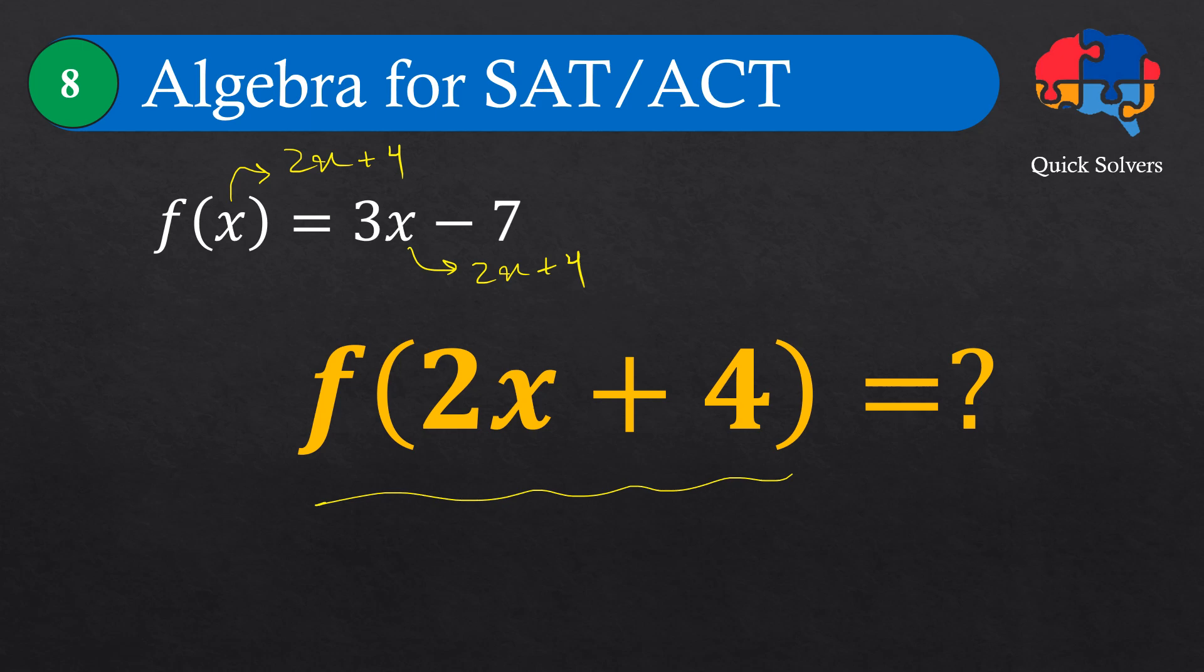If I do that, then I'll get f of—so let's replace this—f of 2x plus 4 equals 3 times, instead of x I'll replace that by 2x plus 4, and then we have minus 7.